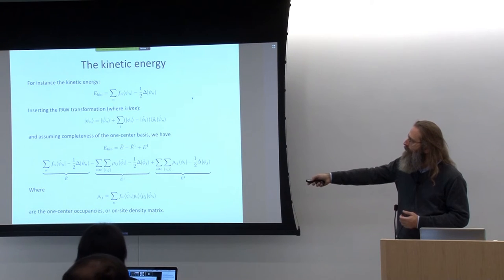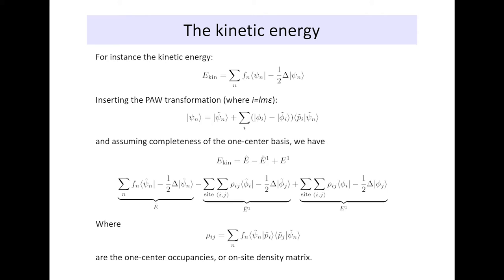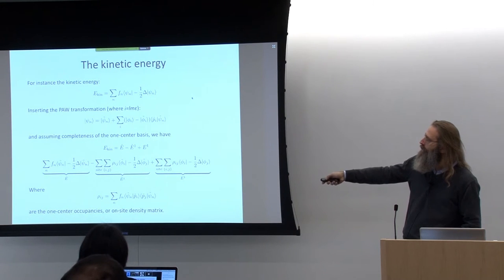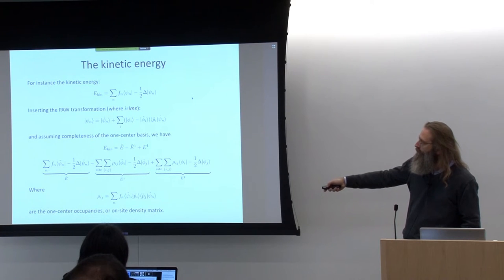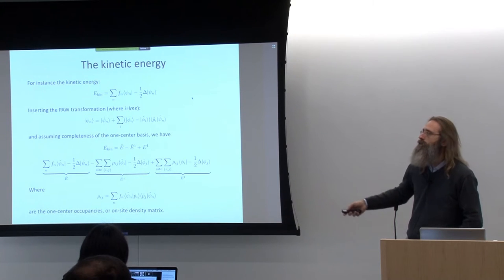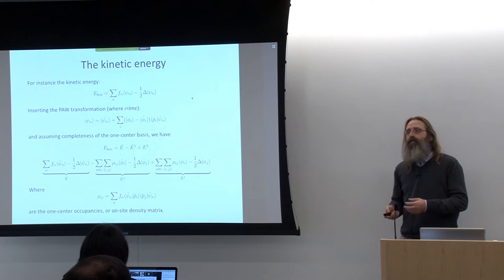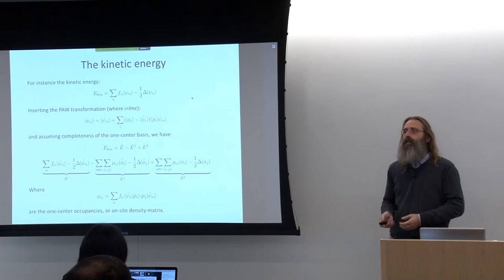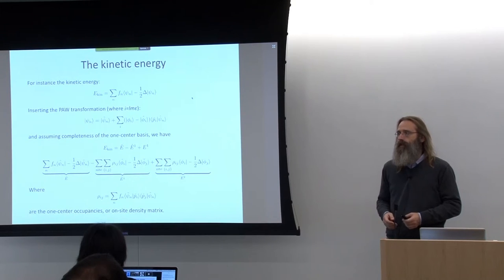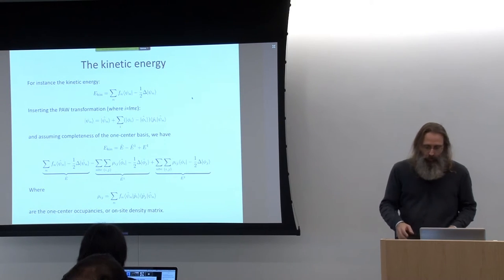The whole PAW method lives from the fact that all contributions can be separated into three terms where there's never any admixture of something that lives on the plane wave grid and something that lives on the radial grid. The only connection between the two grids is the projection of the plane wave function onto the projection operators — what are called one-center occupancies. We have so much freedom in choosing those projection operators, since they only need to be dual to the partial waves, that we can choose them in a form easily representable in plane waves. That is why the PAW method actually works.